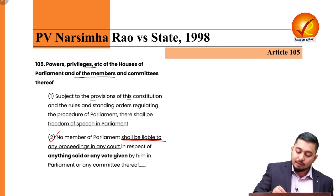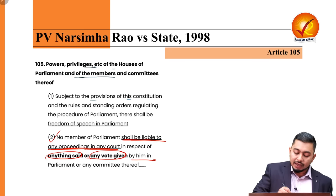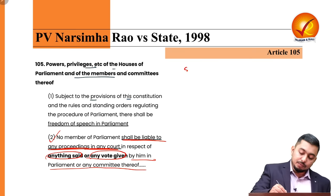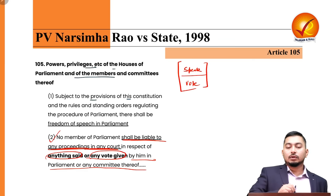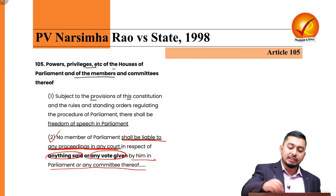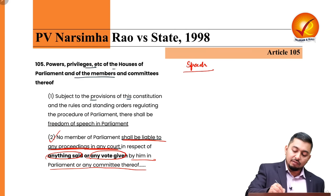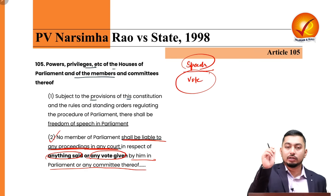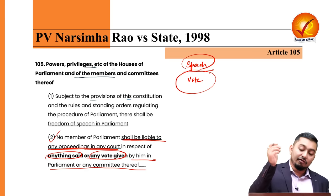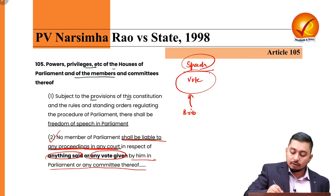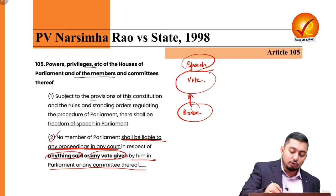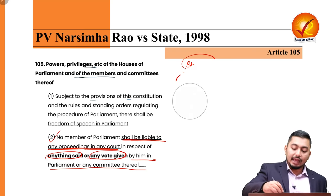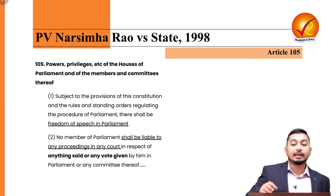No member of Parliament shall be liable to any proceedings in any court in respect of anything said or any vote given in Parliament or any committee thereof. That means if I speak or vote, I have some form of immunity. But whether giving a bribe and then voting amounts to free vote and free speech — or whether it is a violation — is why this case has been reopened, and this is the criticism of the judgment.